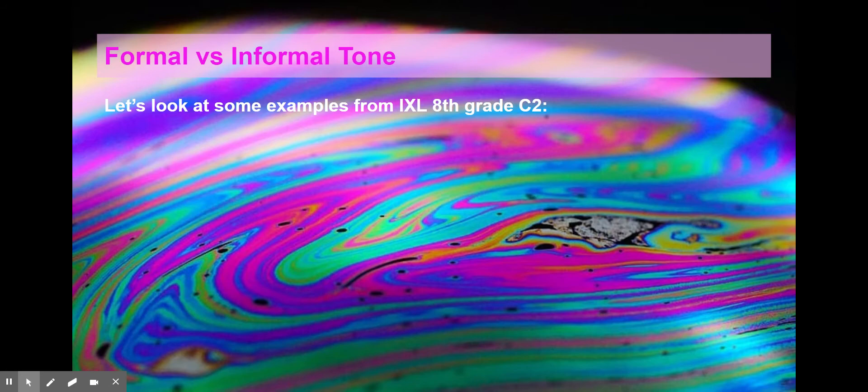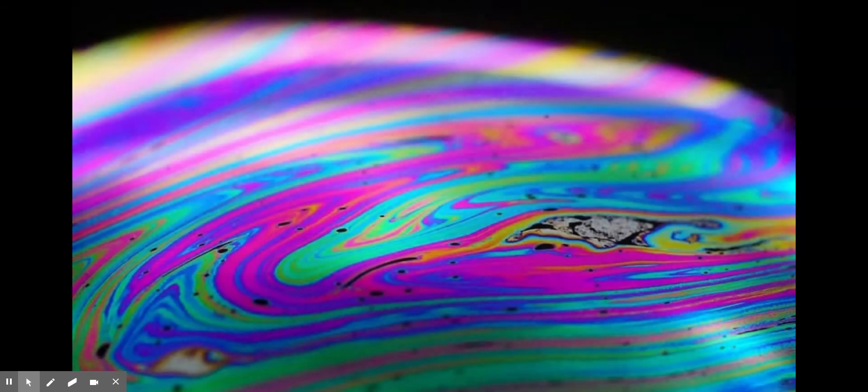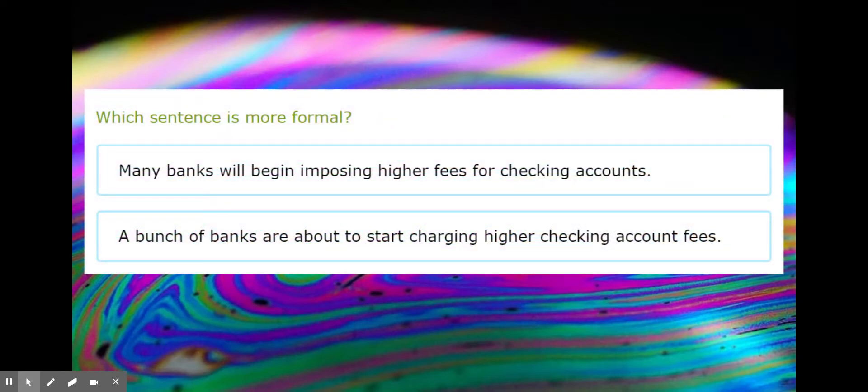Which sentence is more formal? 'Many banks will begin imposing higher fees for checking accounts' or 'A bunch of banks are about to start charging higher checking account fees'? If we go back to the Queen of England, would the Queen say 'a bunch of banks are about to start charging higher checking account fees'? No, probably not.